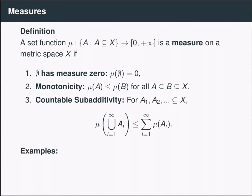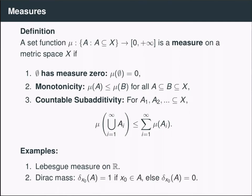Some familiar examples of measures are Lebesgue measure on the real line. A simpler example is the Dirac mass. So given the point x₀, this is a measure whose mass is concentrated at the point x₀ in the sense that the measure of a set A is 1 if and only if that set contains x₀, otherwise it's 0. And another simple example of a measure is just counting measure, which just counts the number of elements inside a set A.